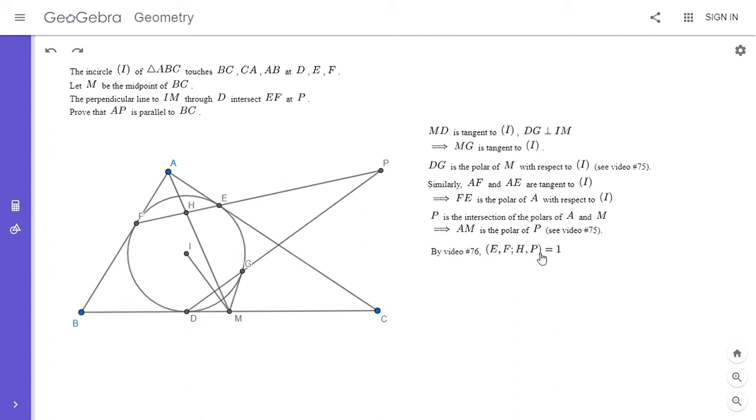So where do we go from there? Well, we can take these four points in the cross ratio, and we can project them through A and onto the line BC. So what happens then? If we project E through A, it goes to point C. If we project F through A, it goes to point B.